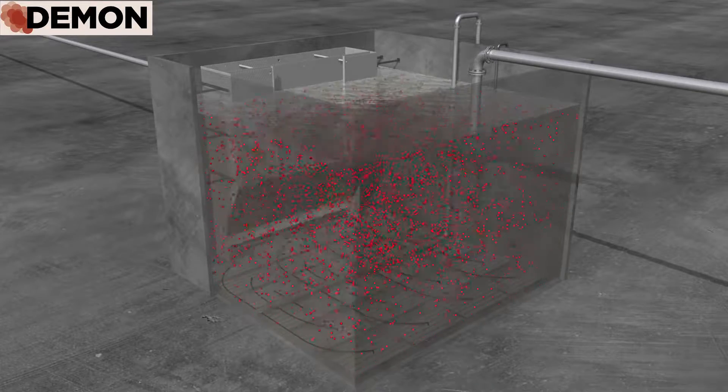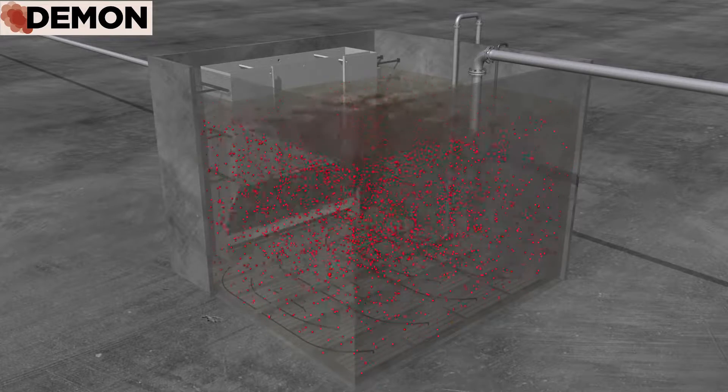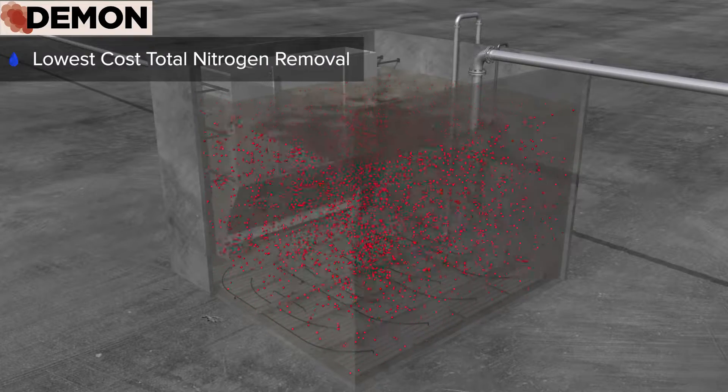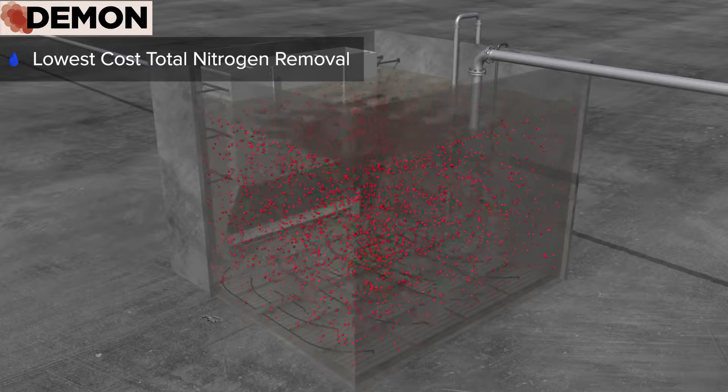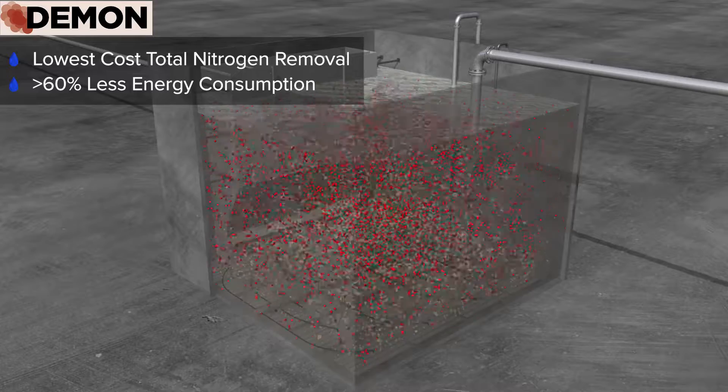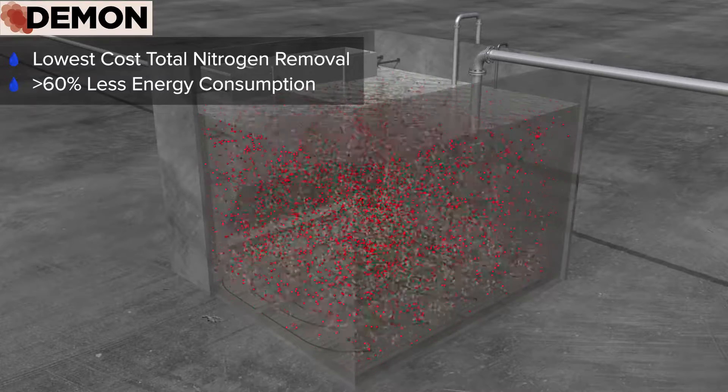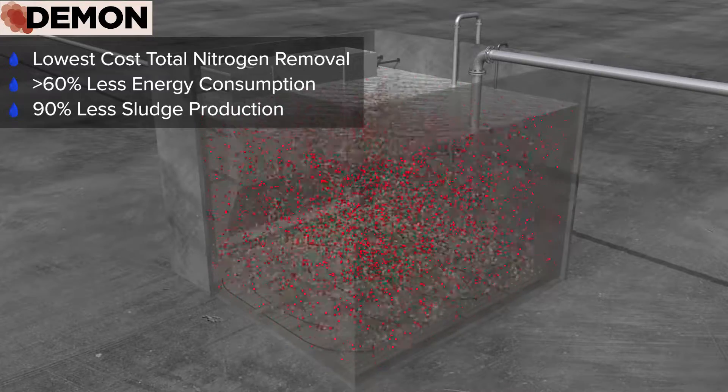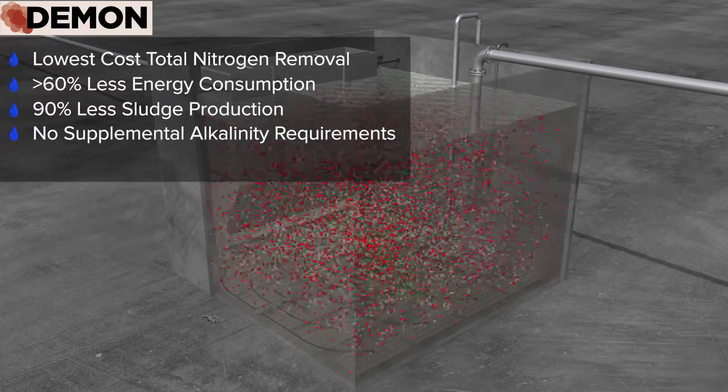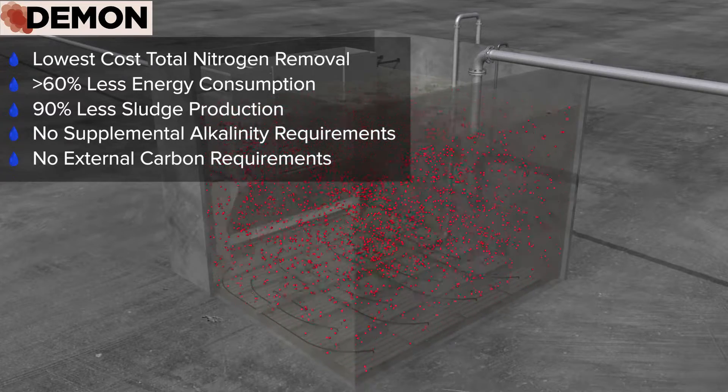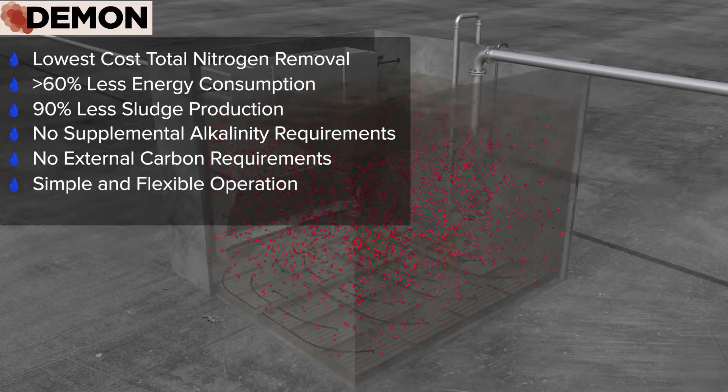The World Waterworks Demon Animox process helps to decrease this problem by providing the lowest cost total nitrogen removal process. By using the Demon Animox process, municipalities can have greater than 60% less energy consumption as well as 90% less sludge production, with no supplemental alkalinity or external carbon required.